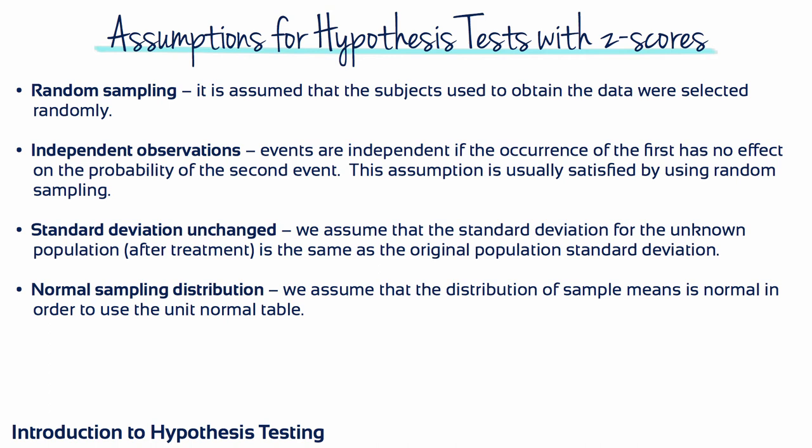In order to conduct hypothesis tests, we need to make four assumptions. First, random sampling: it's assumed that the subjects used to obtain the data were selected randomly. Second, we assume that observations are independent — events are independent if the occurrence of the first has no effect on the probability of the second, which is usually satisfied by random sampling. Third, we assume that the standard deviation for the unknown population is the same as the original population's standard deviation. And lastly, we assume that the distribution of sample means has a normal shape in order to use the unit normal table.